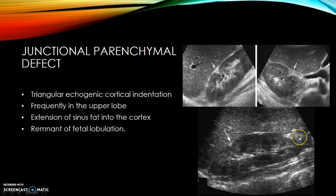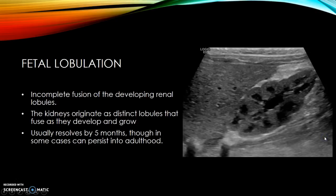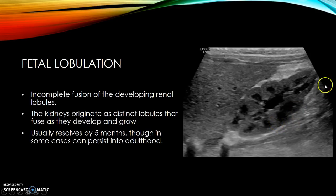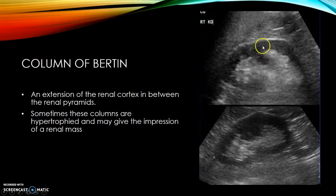There are many normal variants of renal anatomy. The first and very common one is a junctional parenchymal defect — a triangular-shaped echogenic structure that is an invagination of sinus fat into the cortex, frequently seen in the upper lobe, and a remnant of fetal lobulation. Fetal lobulation is the incomplete fusion of developing renal lobules. The kidneys originate in the embryo with distinct lobules that fuse as they develop and ascend. This usually resolves by five months but can persist into adulthood.